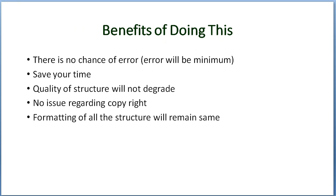So what are the benefits of drawing the structure from ChemDraw? There is no chance of error — error will be minimum. It will save your time, which is most important for any researcher. Quality of structure will not degrade. There is no copyright issue. And the formatting of all structures will remain the same. If you are copying structures from Google, different structures have different formatting and different styles, but if you draw your own structures in software, the formatting of all structures will remain the same.